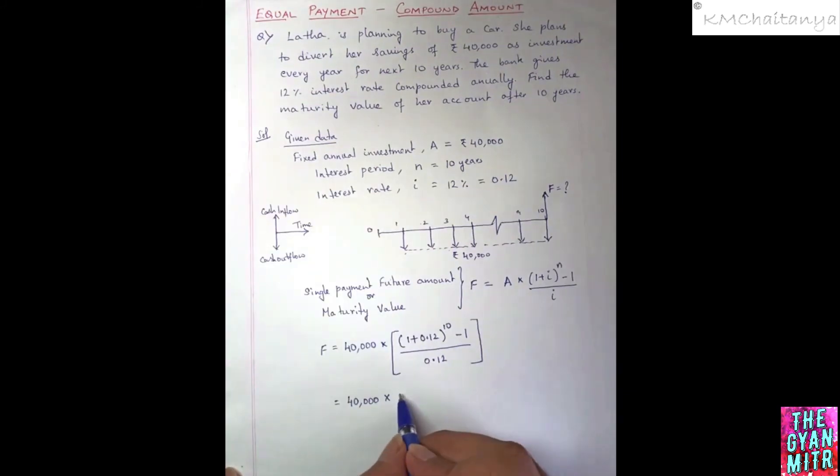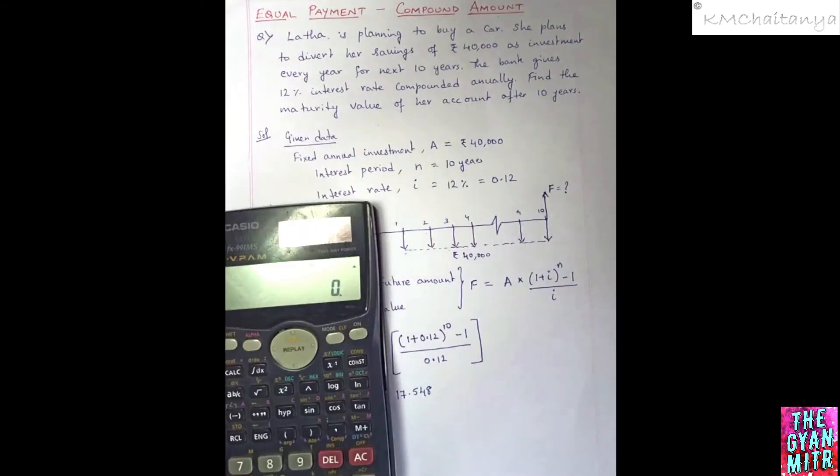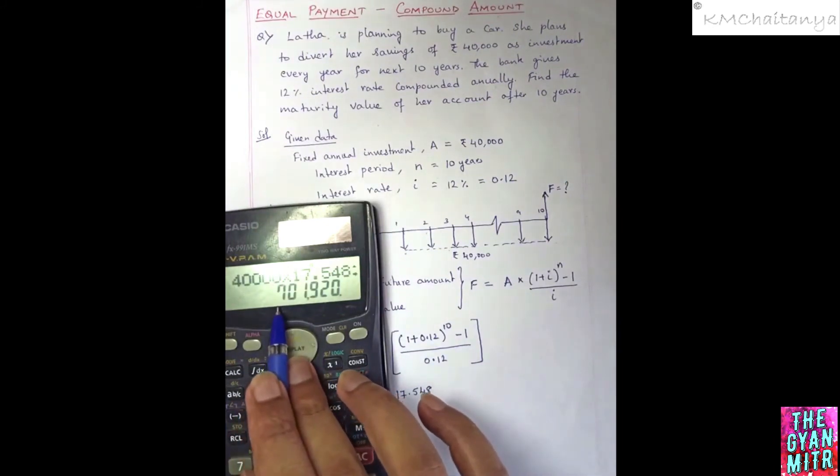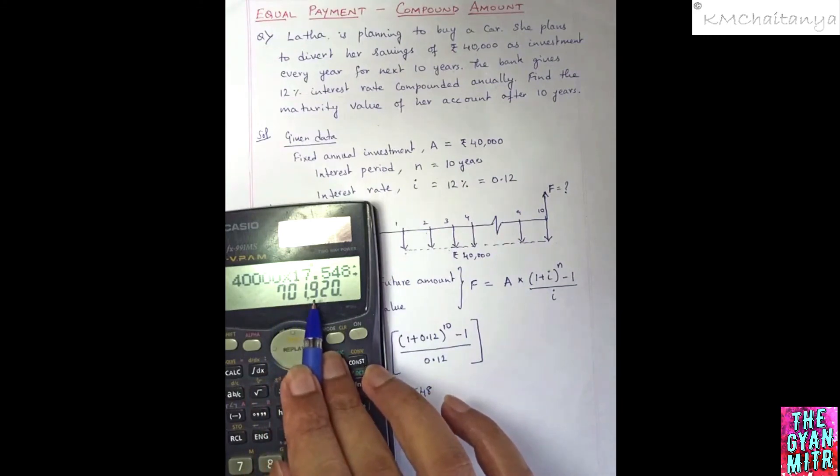Which is equal to, now I'll multiply these terms. We have 40,000 multiplied by 17.548, which is giving 7 lakh 1 thousand 920 rupees.